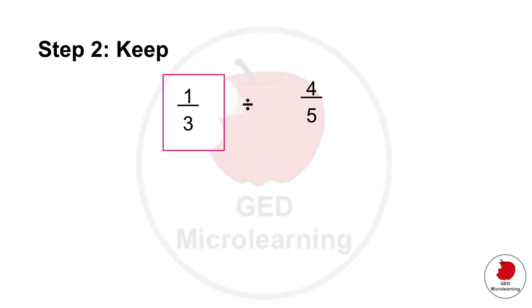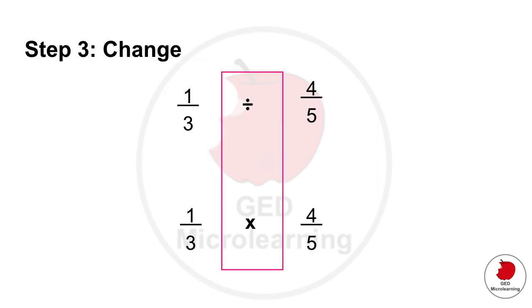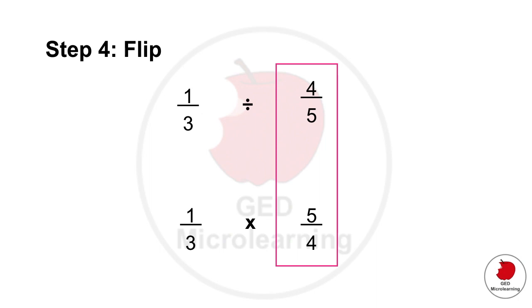So you're going to keep that first number one-third. You're going to go from division to multiplication and you're going to flip this last fraction from four-fifths to five over four.